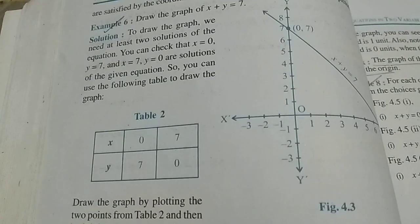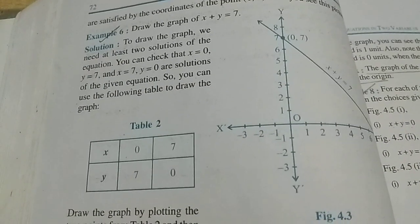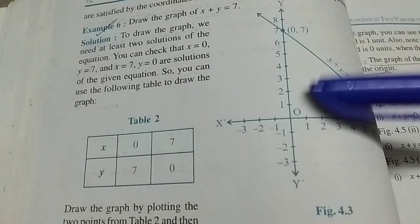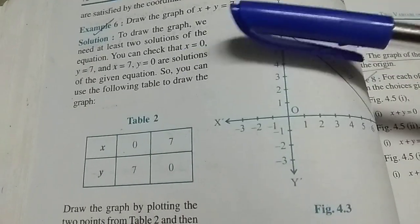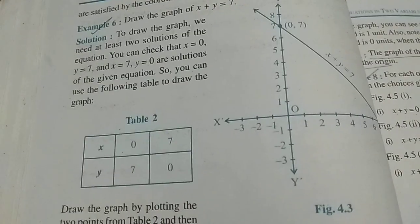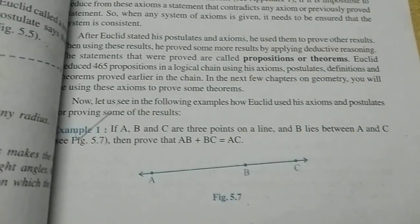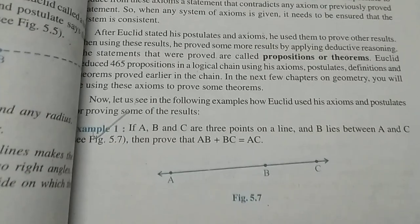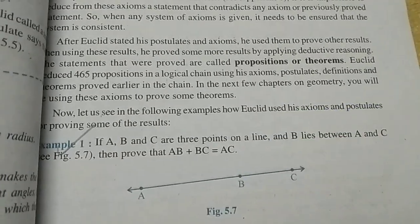From Chapter 4, Linear Equations, you can basically get these - draw the graph of x plus y equals 7. The statement can be changed. From Introduction to Euclid's Geometry, Example 1 is important.